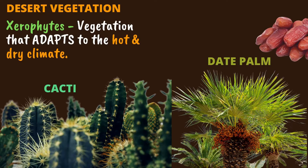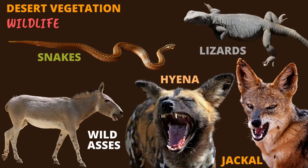What are xerophytes? Vegetation that adapts to the hot and dry climate. What kind of plants can you find in deserts? Cacti and date palm. Look at the dates — do you like dates?